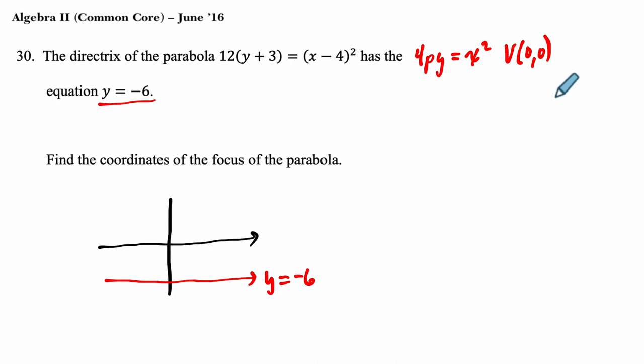And if the vertex is at hk, we translate this parent function here. This is like my parent function. We translate it over h and up k. And the way we do that is by subtracting h and subtracting k from our inputs.